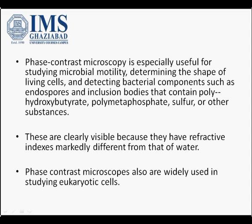Phase contrast microscopy is used to study microbial motility, the motion of microbes, the shape of living cells, and bacterial components such as endospores and inclusion bodies containing polyhydroxybutyrate, polymetaphosphate, sulfur, or other substances. These are clearly visible because they have refractive indexes markedly different from that of water. Phase contrast microscopy is also used to study eukaryotic cell structures.